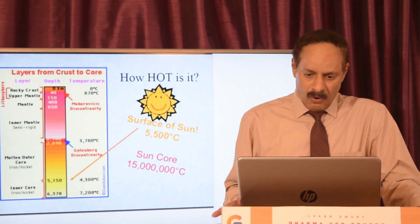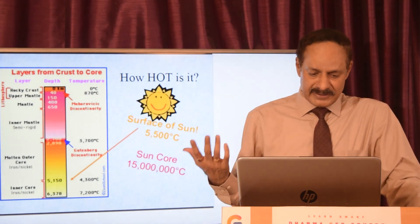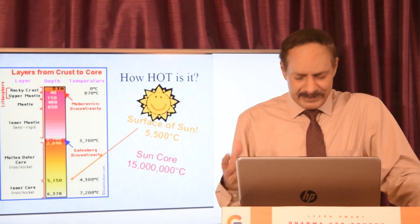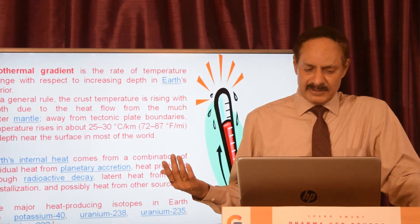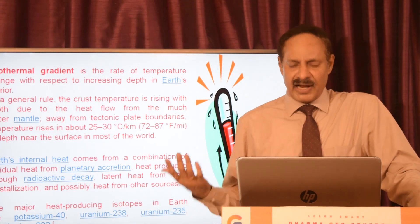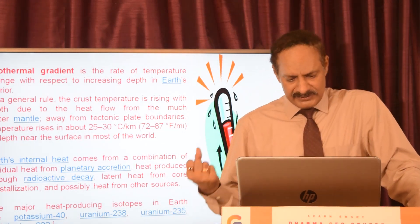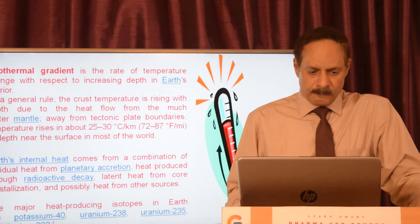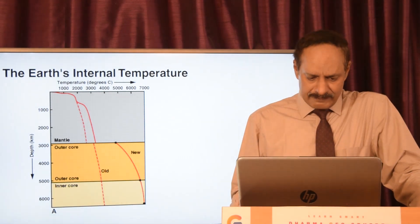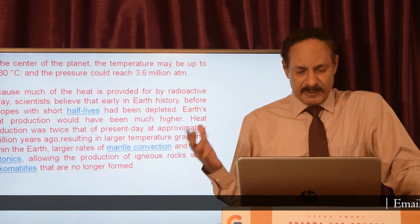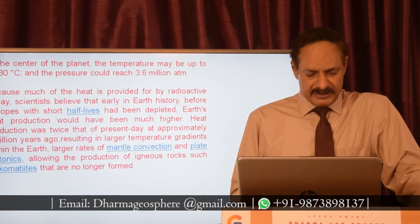Coming to temperature — how hot it is — the surface of the Sun's temperature is 5,500 degrees Celsius, whereas the Earth's core is even more than that. The geothermal gradient is the rate of temperature change with respect to increasing depth in Earth's interior. As a general rule, the crust temperature rises with depth due to heat flow from the mantle. The Earth's internal heat comes from planetary accretion and also from radioactivity. At the center, the temperature may be as much as 6,730 degrees Celsius, and the pressure could reach up to 3.6 million atmospheres.